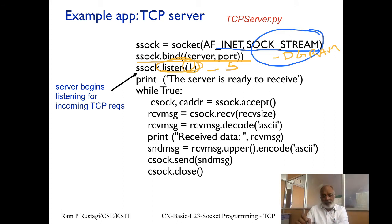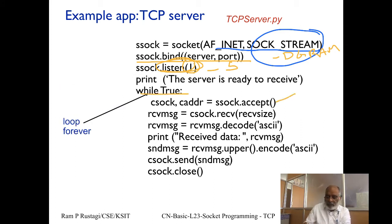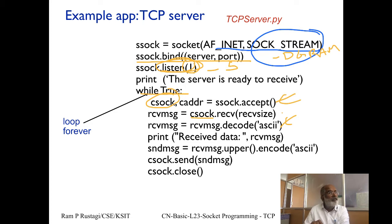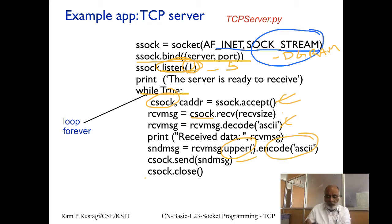Since a server should always be running, there is a loop that runs forever. Each iteration calls accept, which returns a new client socket. The server then receives the message on that socket, converts it to the correct internal character stream, converts it to uppercase, encodes it back to bytes, and sends it. This simple server accepts one message, sends one response, and closes the connection, then loops back to accept the next connection.